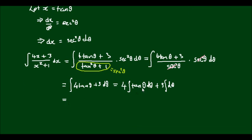Now the integral of tan theta we found out was equal to negative of the natural log of cos theta. And we have to multiply that by 4. The integral of d theta is just equal to theta, and that's now multiplied by 3.